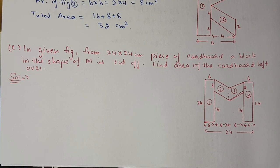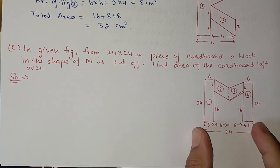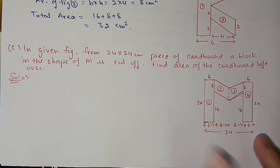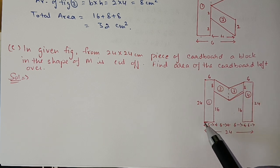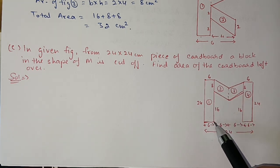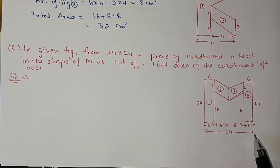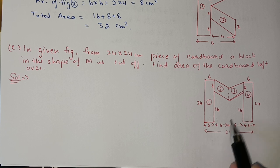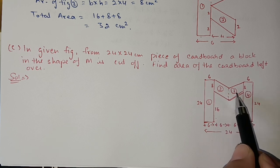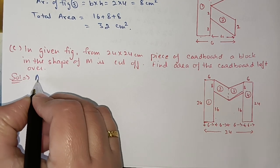Question 43, part (c): From a 24 cm × 24 cm piece of cardboard, a block in the shape of M is cut off. Find the area of the cardboard left over. The M shape is divided into four parts: figure 1 is a rectangle (24 × 6), figure 2 is a parallelogram (base 8, height 6), figure 3 is a parallelogram (same dimensions), and figure 4 is a rectangle (24 × 6).